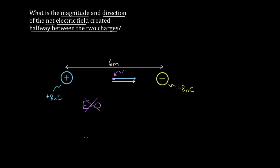So these don't cancel — they actually add up to twice the field, because both vectors point in the same direction. It's not always the case that a negative and a positive charge cancel their electric fields. Those fields might point the same direction, so you have to be careful.